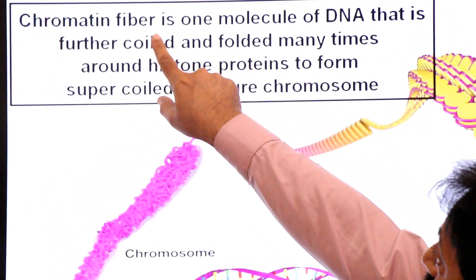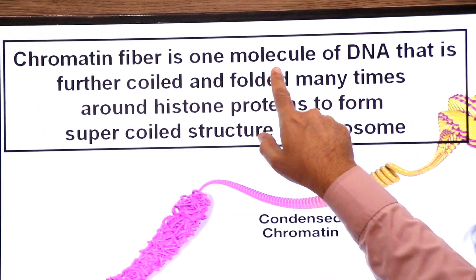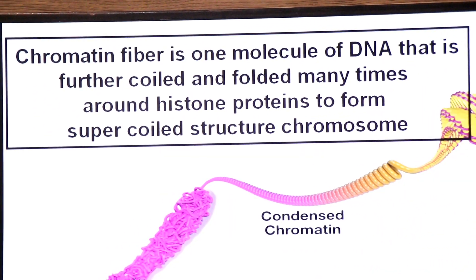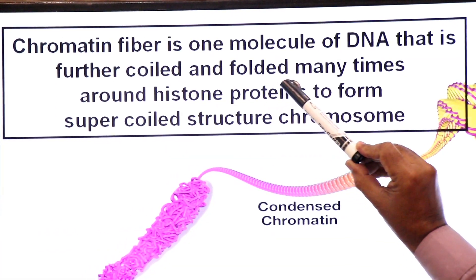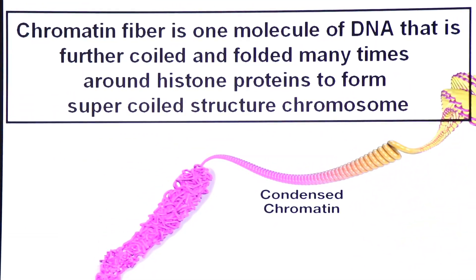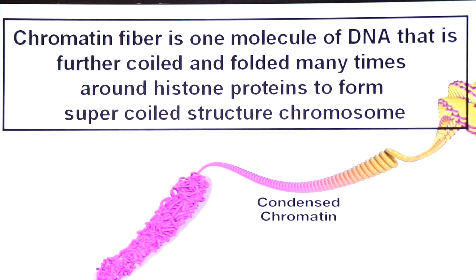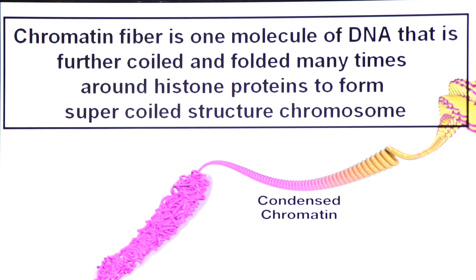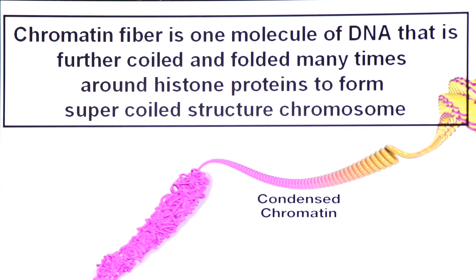Chromatin is one molecule of DNA that is further coiled and folded many times around the histone protein to form a super-coiled structure called chromosome.